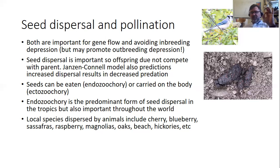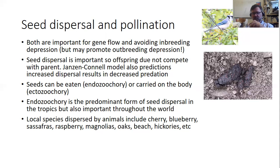Burrs that stick to clothes — particularly to long-haired dogs — are a great example of ectozoochory. Locally, species that use endozoochory and are dispersed by animals include economically important things such as cherry and blueberry, but also sassafras, raspberries, magnolias, and oaks. Beaches and hickories are dispersed by squirrels, and smaller-seeded species are dispersed by blue jays.